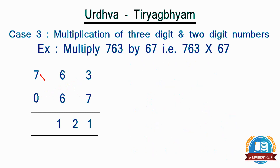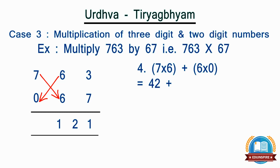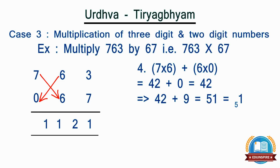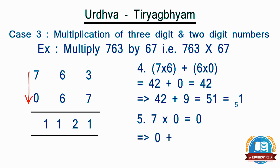Step 4: take the first 2 digits of the numbers and multiply diagonally, i.e. 7 by 6 and 6 by 0, the sum of which becomes 42, and add the carried over number, i.e. 9, to it. So the total becomes 51. We will retain 1 as the fourth digit of the answer and carry 5 to the left. Step 5: take the first digits and multiply vertically, i.e. 7 by 0, which becomes 0, and add the carried over number, i.e. 5, to it. So the total becomes 5. It becomes the fifth digit of the answer and the final answer becomes 5, 1, 1, 2, 1.